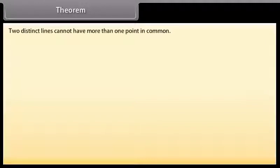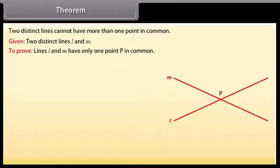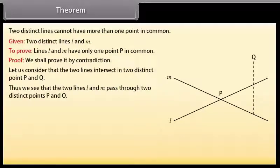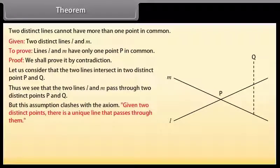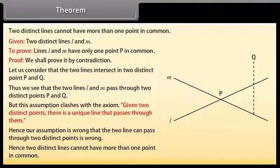Theorem: Two distinct lines cannot have more than one point in common. Given two distinct lines L and M, we have to prove that lines L and M have only one point P in common. Proof: We shall prove it by contradiction. Let us consider that two lines intersect in two distinct points P and Q. Thus, we see that the two lines L and M pass through two distinct points P and Q. But this assumption clashes with the axiom: Given two distinct points, there is a unique line that passes through them. Hence, our assumption that the two lines can pass through two distinct points is wrong. Hence, two distinct lines cannot have more than one point in common.